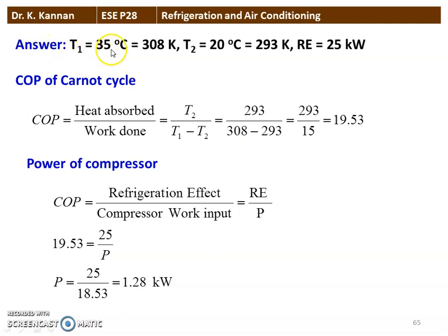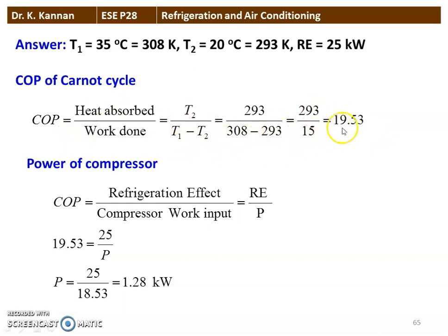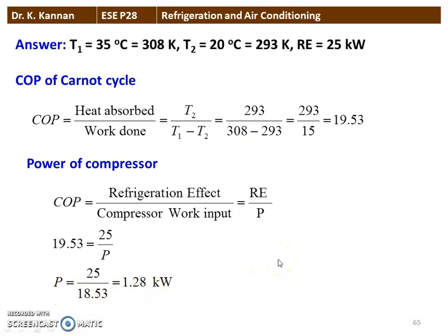T₁ = 35°C = 308 K, T₂ = 20°C = 293 K, refrigeration effect = 25 kW. COP of the refrigerator = T₂ / (T₁ − T₂) = 293 / (308 − 293) = 19.53. Defining COP = refrigeration effect / compressor work input = RE / P. Therefore P = RE / COP = 25 / 19.53 = 1.28 kW. The power of the compressor is 1.28 kW.